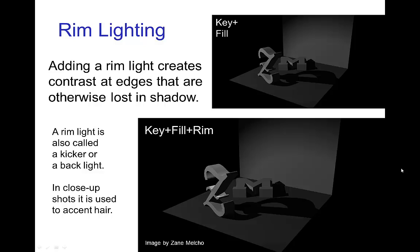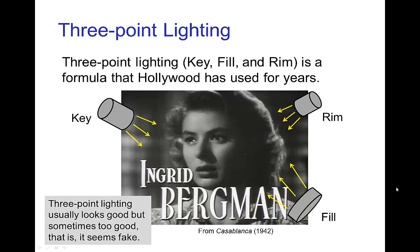Three-point lighting is when we add a rim light to accentuate edges which would otherwise be lost in shadows. We see that nicely mostly around the middle of the Z here, which is picked up by the rim light. This is sometimes called the kicker or a backlight, and in close-ups it's often used to accentuate the hair. So that's three-point lighting using a main key light, a fill light to put in some ambient light overall to soften the shadows, and then a rim light to accentuate some parts such as the outline of the hair on this actress. It's a very common type of lighting — looks good, but maybe sometimes a little too good.